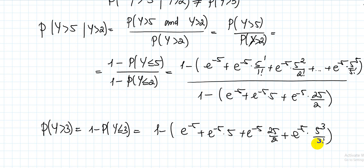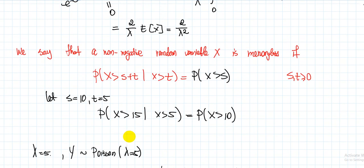But the exponential distribution does have this special memoryless feature. At every moment in time it forgets what happened before. For example, the probability of waiting more than 15 minutes given you have already waited 5 minutes equals the probability of waiting more than 10 minutes. You don't care what happened in the previous 5 minutes. This memoryless property holds for the exponential distribution but not for the Poisson.